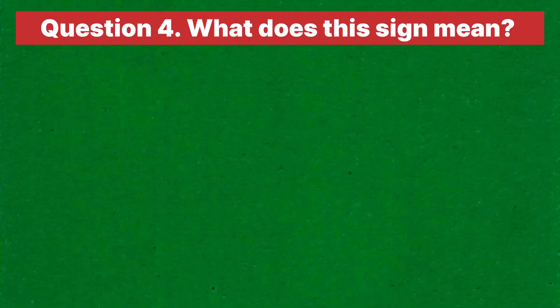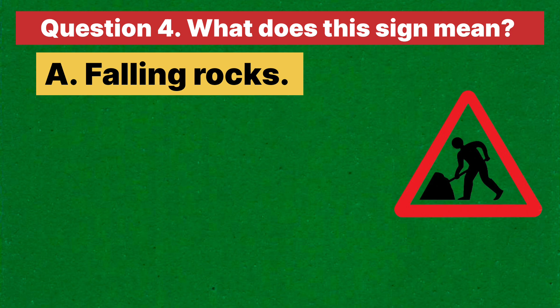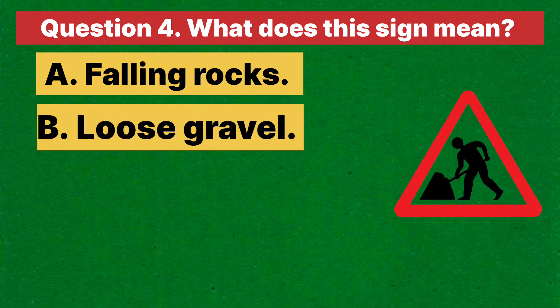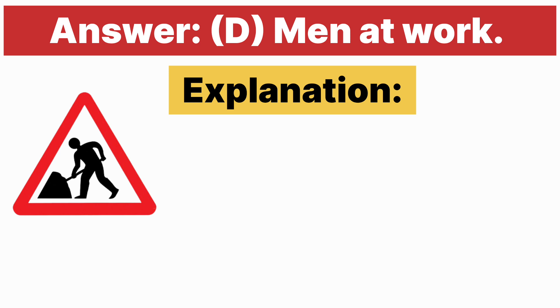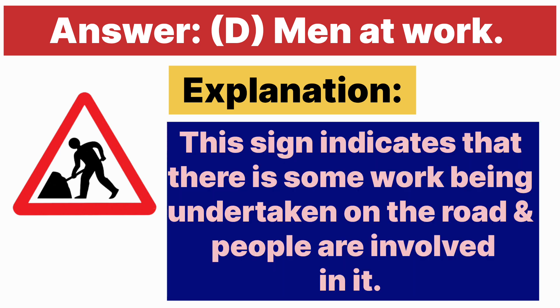Question four: What does this sign mean? A. Falling rocks. B. Loose gravel. C. Dangerous deep. D. Man at work. Answer is D, man at work. Explanation: this sign indicates that there is some work being undertaken on the road and people are involved in it.